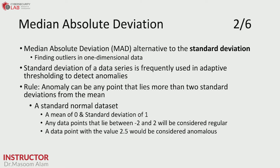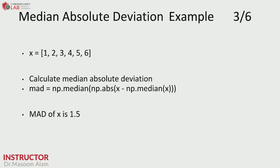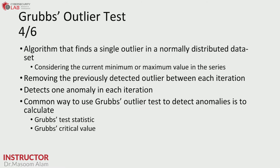Any data point that lies between minus two and two will be considered regular. A data point with a value of 2.5 would be considered anomalous. This is how we calculate the Median Absolute Deviation — it is also given in the case study and we will see it there.